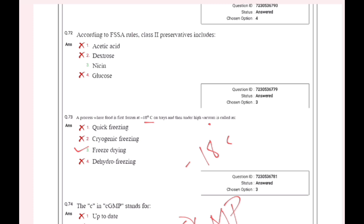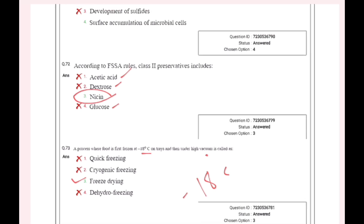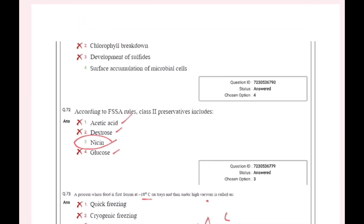Acetic acid. Dextrose is glucose. Class 2 preservatives is a compound. Class 2 preservatives is a compound.